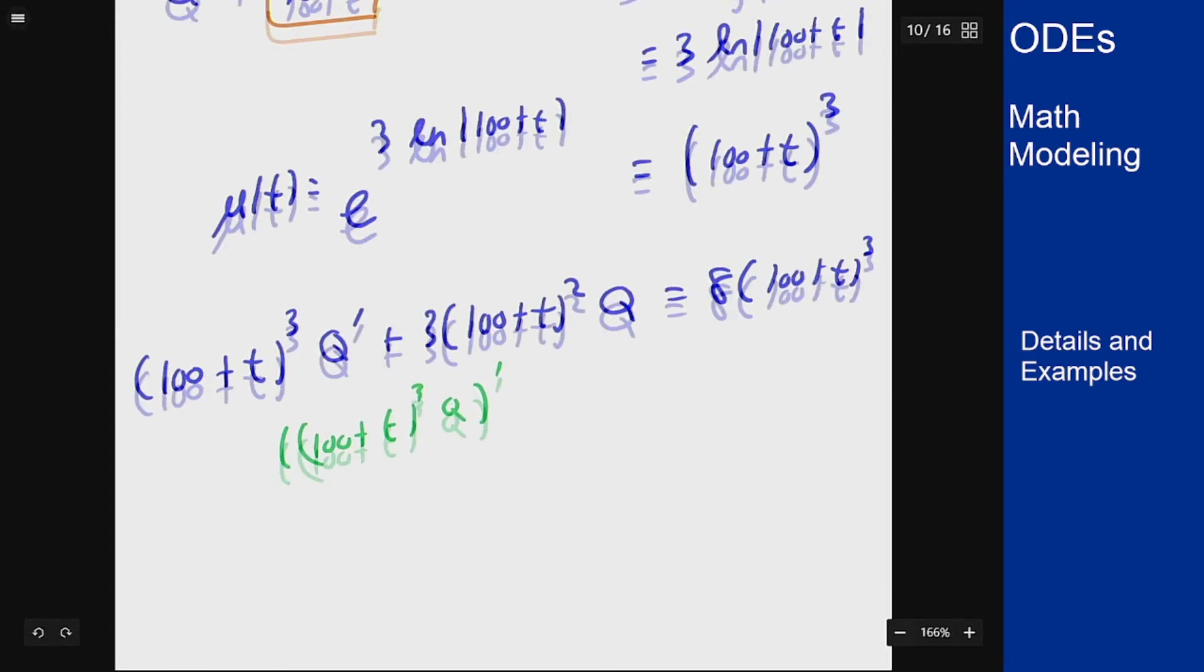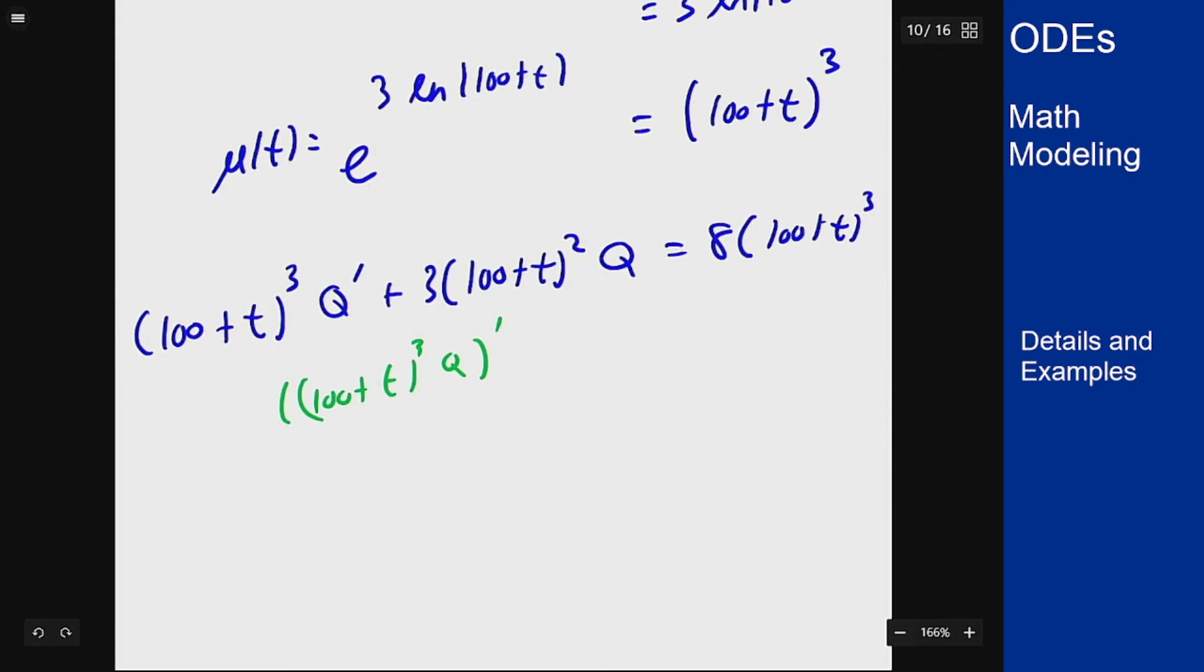I can integrate both sides. I will get on the left 100 plus t cubed times Q equals integral of the right side.